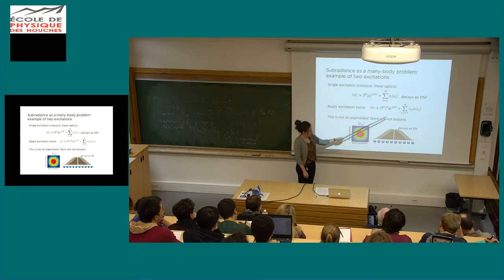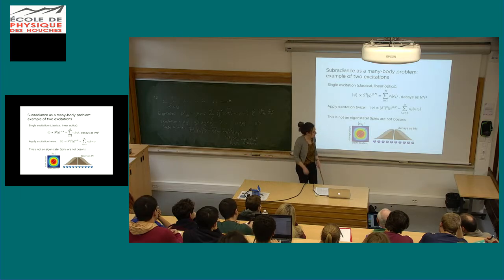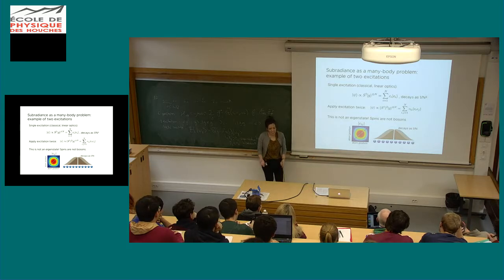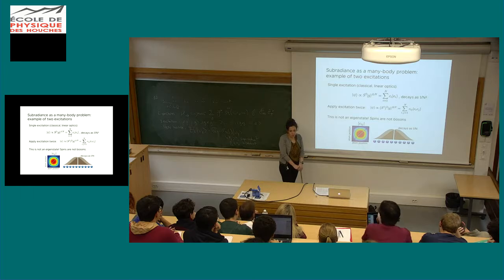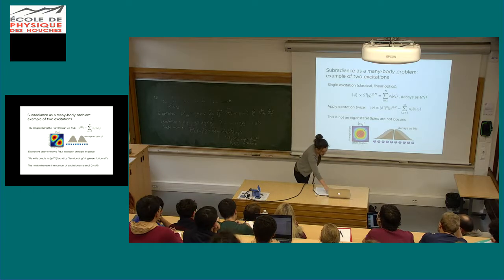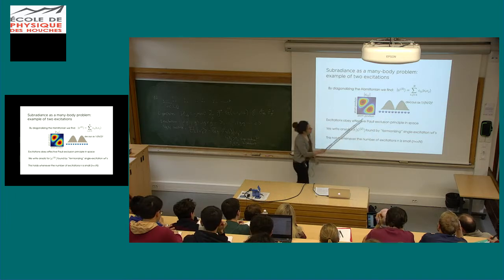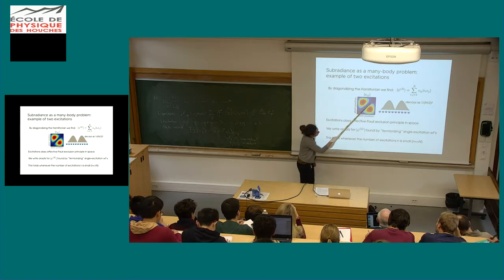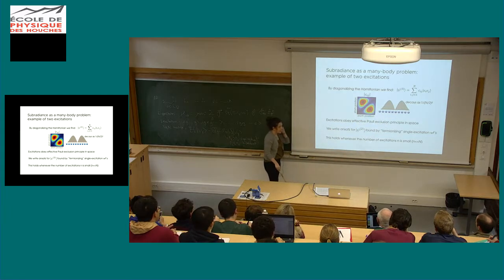Because the spins are not bosons, this is not an eigenstate. It decays quite poorly — the decay rate scales as 1/N, not 1/N³. It's still dark, but poorly dark. Instead, you can take the Hamiltonian, look at the two-excitation subspace, and diagonalize. The eigenstate C_{ij} has basically no population on the diagonal where i = j, with maxima off-diagonal, and it's very smooth. In this case, we find it decays as 1/(N/2)³. Half the chain is used to host one excitation and half to host the other.